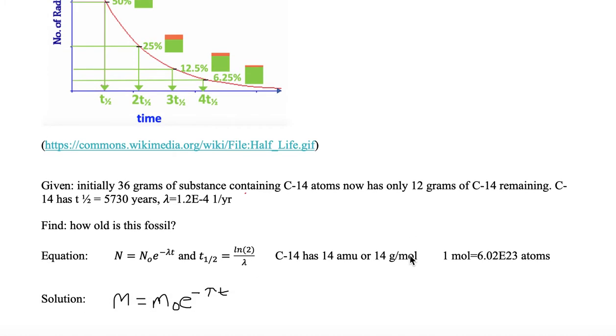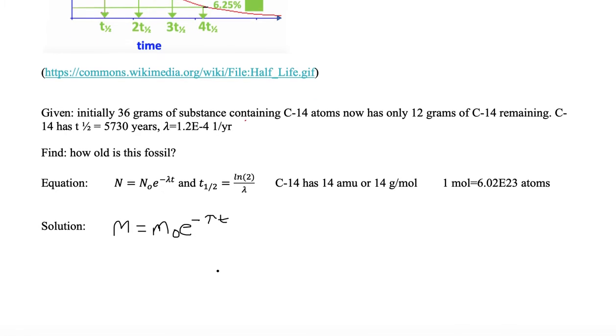So let's solve. We're going to use our N equals N0 times e to the minus lambda t equation, but we're going to put it in the form of M equals M0 times e to the minus lambda t. Initially it's 36 grams, so that's got to be M0 times e to the minus lambda t, and I'm just going to leave it as lambda t for now.